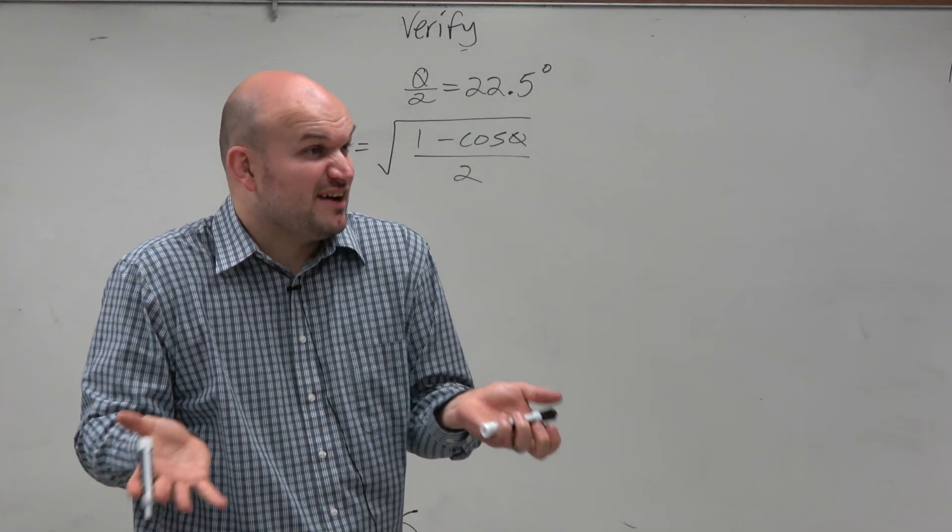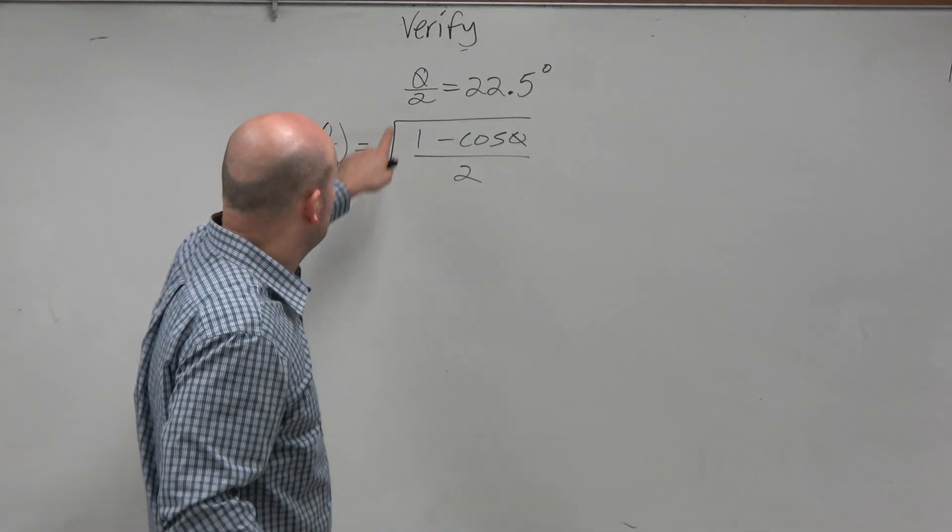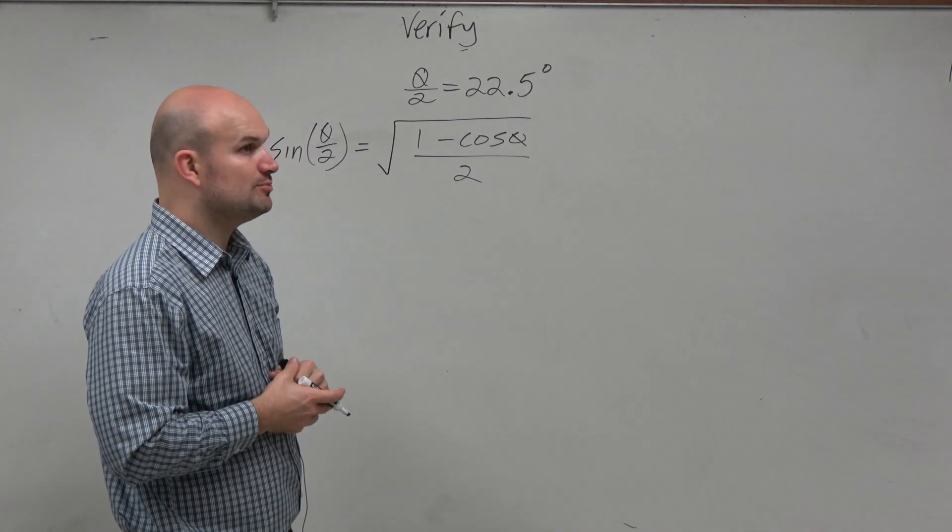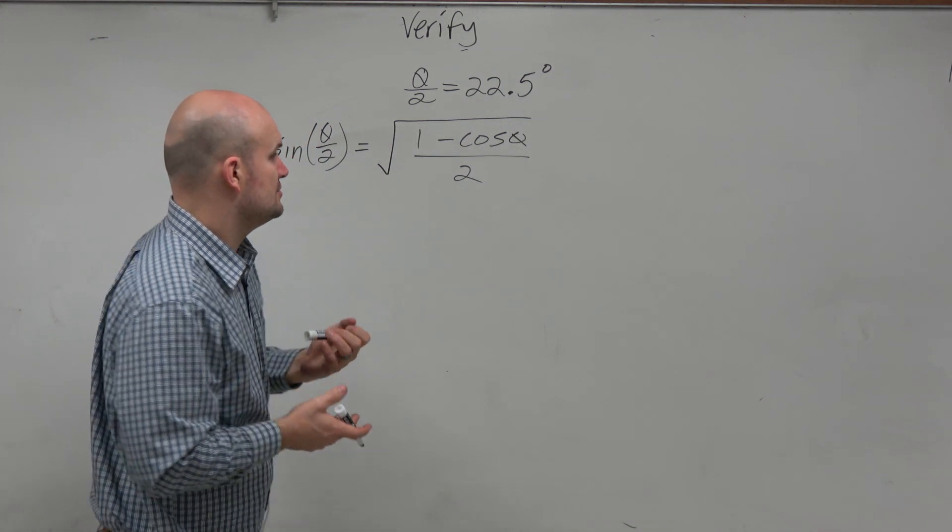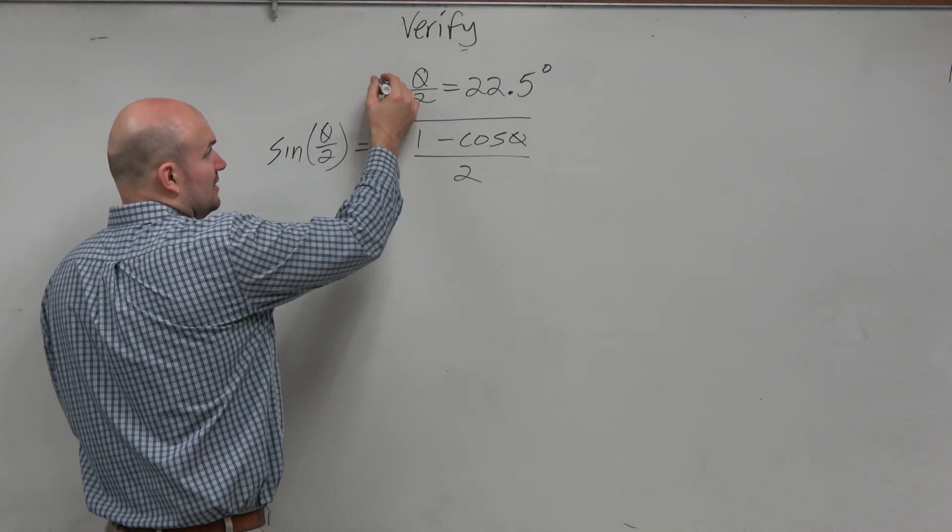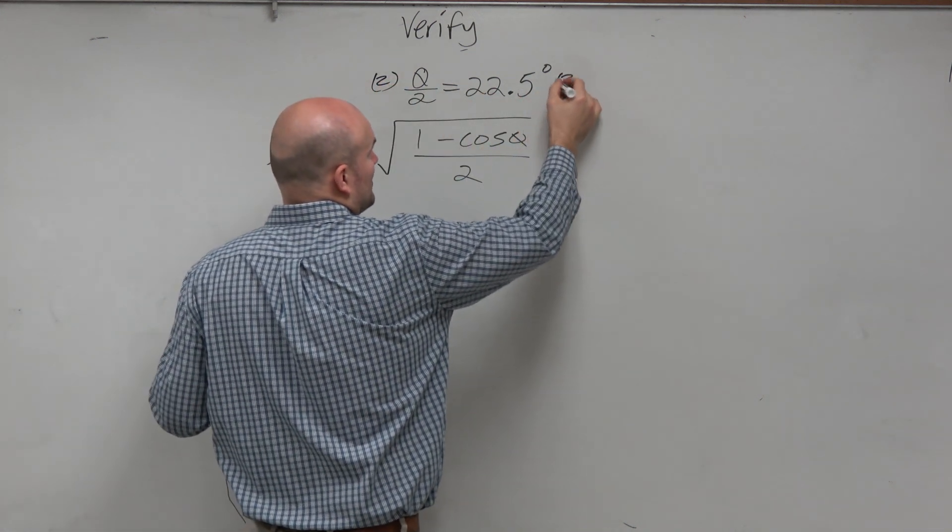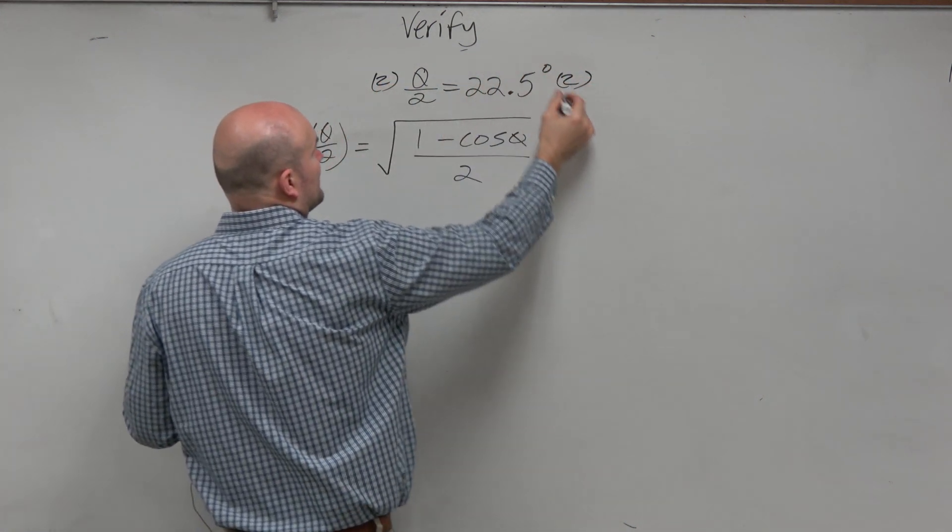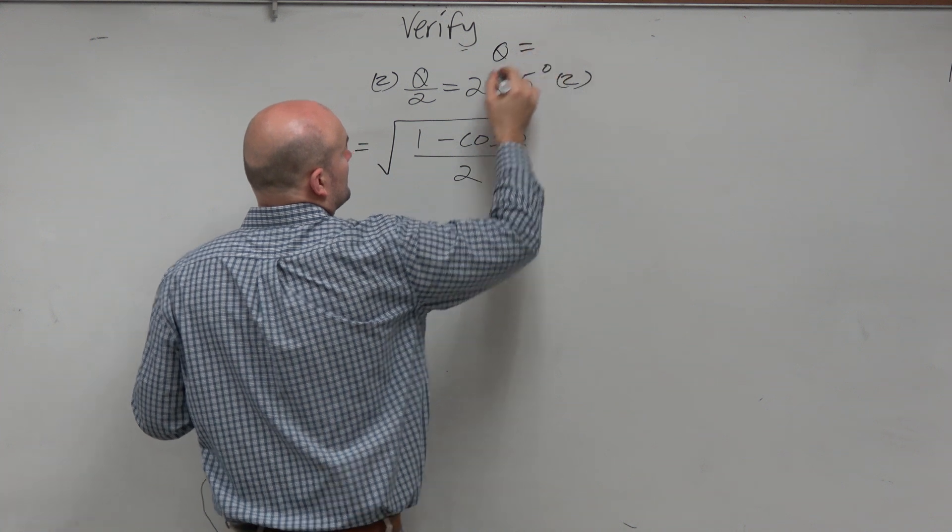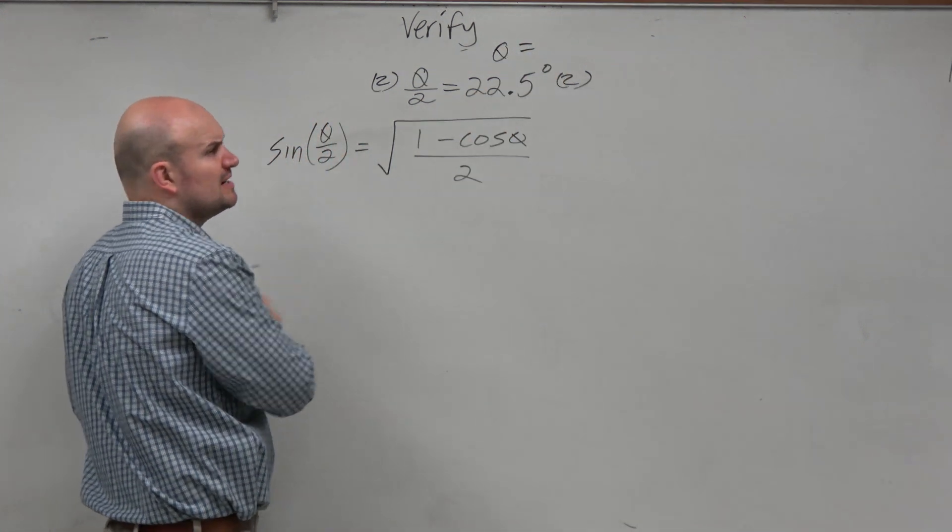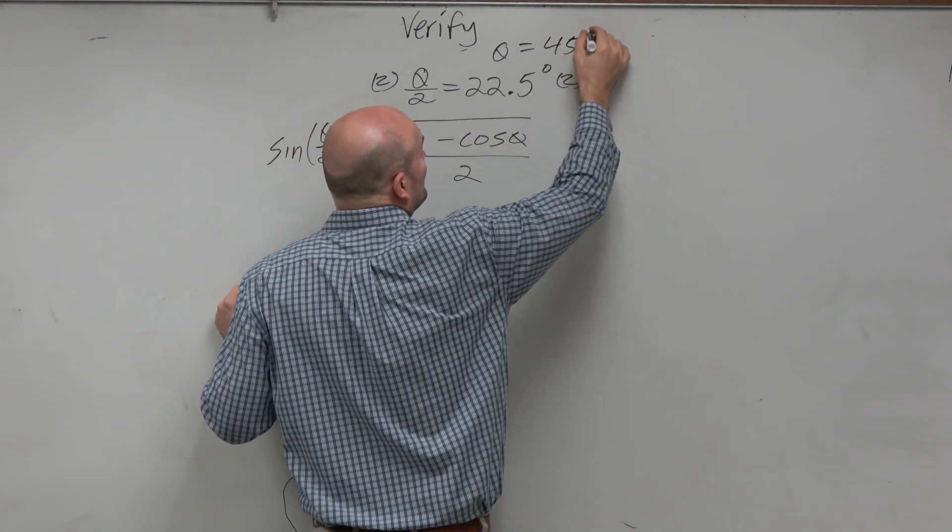Now the problem is we've got to figure out what theta is. Theta divided by 2 is 22.5 degrees. So therefore, if we need to solve for theta, we need to get rid of that 2. So we multiply by 2 on both sides.